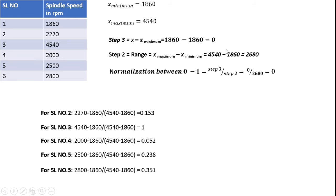Here, the step 3 divided by step 2. According to our step 3, there is 0 available. According to step 2, there is 2680 available. So 0 divided by 2680 is equal to 0. Likewise, I may get the normalized value for serial number 1.